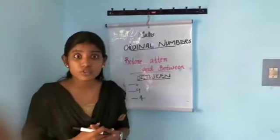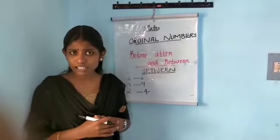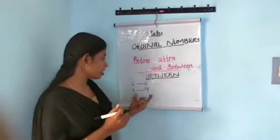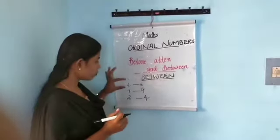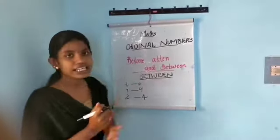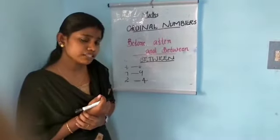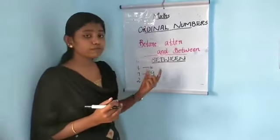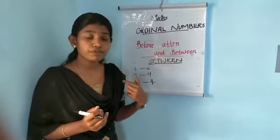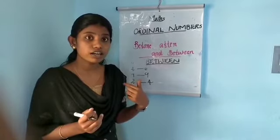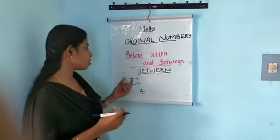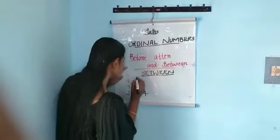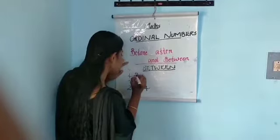Now the last one: between. Between means the middle one. I have written four, a blank, and six. Four comes before five, and six comes after five. So what is between four and six? It is five. We write five here.